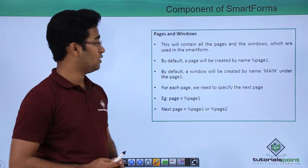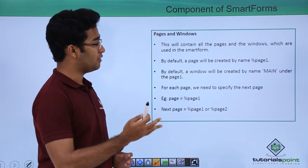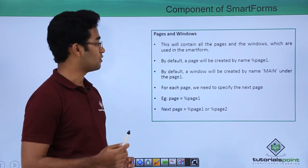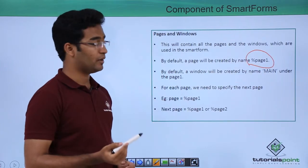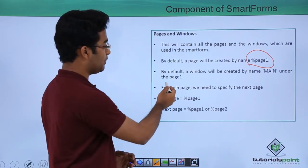Then we have Pages and Windows. This will contain all the pages and the windows which are used in the Smart Forms. By default, a page will be created with the name Page1 and by default a window will be created by the name Main under the Page1 itself.